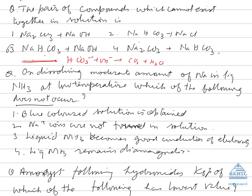Now, on dissolving moderate amount of sodium in liquid ammonia at low temperature, which of the following does not occur? Blue color solution is obtained because of solvated electrons. Sodium ions are not formed in solution. No.